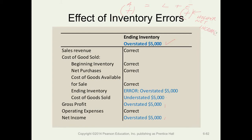The higher net income is a result of the lower cost of goods sold — which is understated — giving you a higher gross profit and a higher net income, assuming operating expenses are correct. So we can say that errors in ending inventory are directly related to net income.